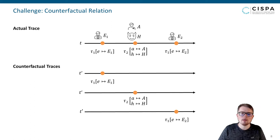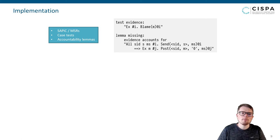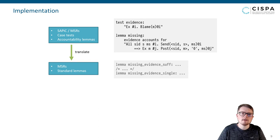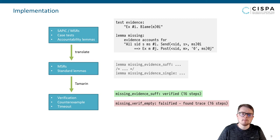We implemented our approach into the protocol verification tool Tamarin, which supports falsification and unbounded verification in the symbolic model. For this, we extended Tamarin with two new syntactic elements: case tests and accountability lemmas, which can be specified as shown here. These are then translated with the protocol specification to multi-set rewrite rules and standard lemmas supported by Tamarin. We can now use Tamarin to verify the lemmas with three possible outcomes: either Tamarin provides a proof for each lemma, or Tamarin finds a counterexample for at least one lemma, or the verification diverges, in which case we need to revise the specification and the accountability lemmas.